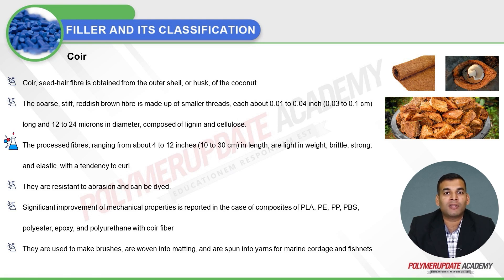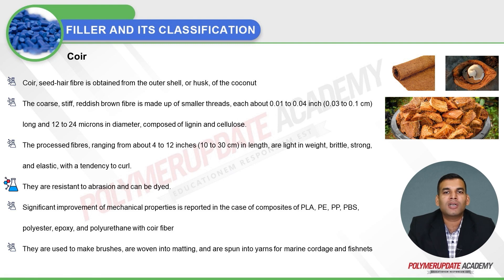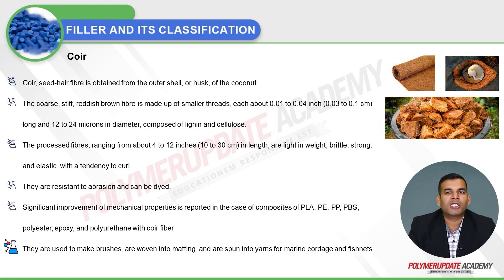Processed coir fiber ranges from 4 to 12 inches (10 to 30 mm) in length. It is light in weight, brittle, strong, and elastic with a tendency to curl. When bundled together, the fibers form extremely high-strength materials that are resistant to abrasion and can be dyed easily. Significant improvement in mechanical properties is reported in composites of polylactic acid, polyethylene, polypropylene, polybutylene succinate, polyester, epoxy, and polyurethane with coir fiber.